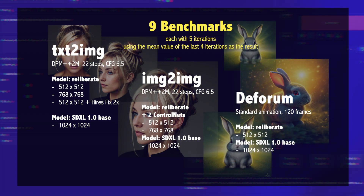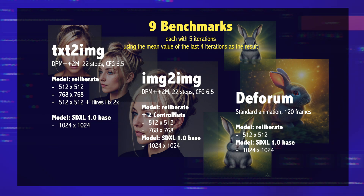I made nine benchmarks, each one with five iterations to get a better picture, and I used the mean value of the last four iterations as the result for each benchmark. The first benchmarks are made with text-to-image at 512x512, 768x768, and 512x512 with a high-res fix. For these tests I used a Reliberate model.